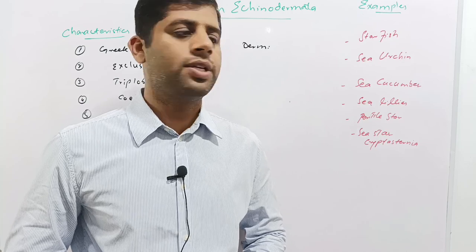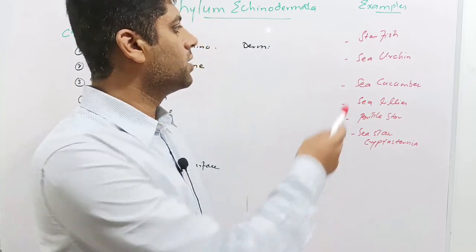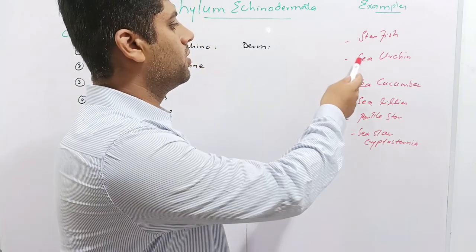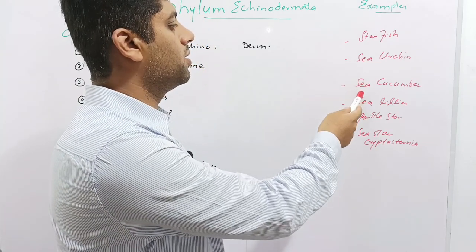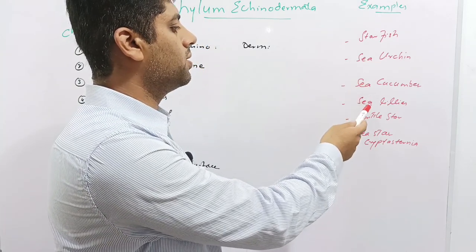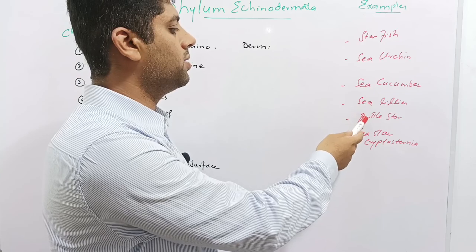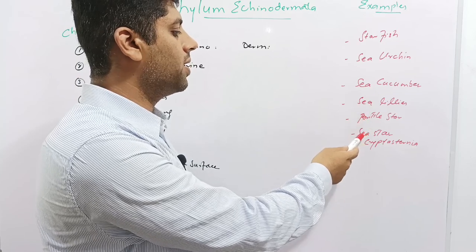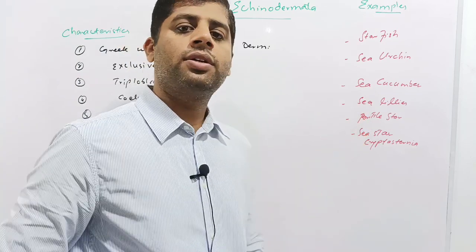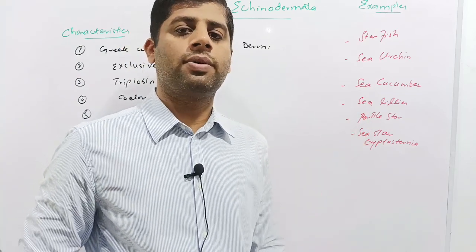Common examples of Phylum Echinodermata are starfish, sea urchin, sea cucumber, sea lilies, brittle star, and the sea star cryptosternia.